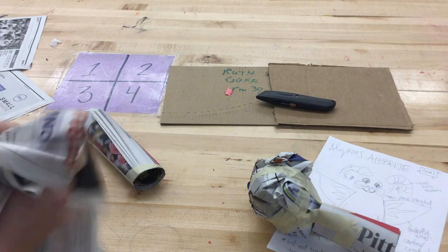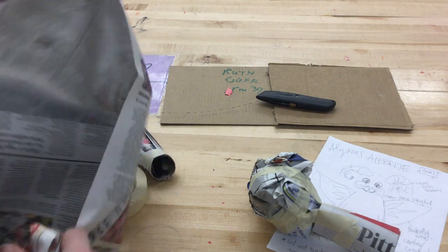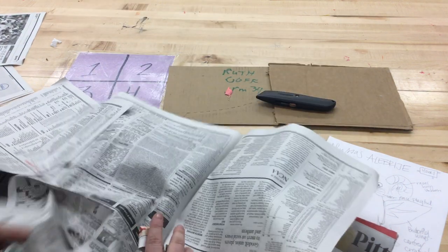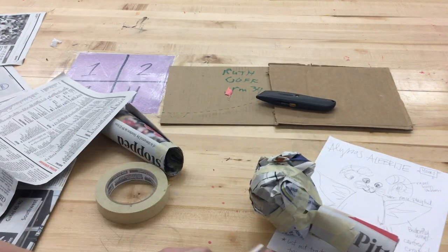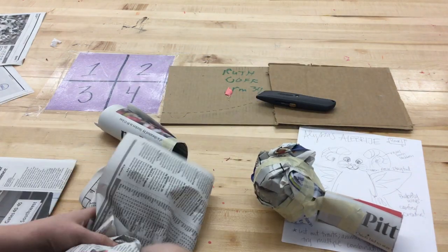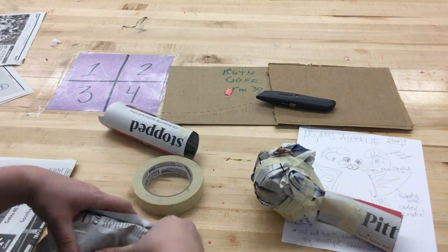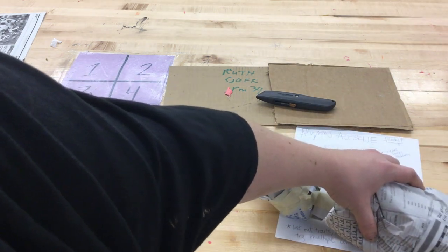Now I'm going to build the body. Starts the same general way. Body should be larger than the head. So I'm kind of crumpling my paper up a little differently. Starting to get a good shaped body there.